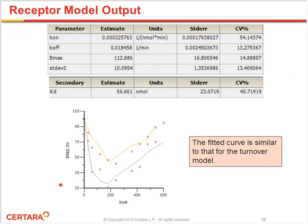Here's the resultant fit for the receptor binding model. Looking at observed versus predicted, this model does a better job at coming down and estimating the maximal effect at the higher dose. We have pretty good precision for all the parameters with the exception of K-on, where the CV is 0.54 — quite high, but not unexpected for a binding model with somewhat limited data. The estimated K-D value is 56 with a CV of 40. Notably, Phoenix does provide CVs for secondary parameters.